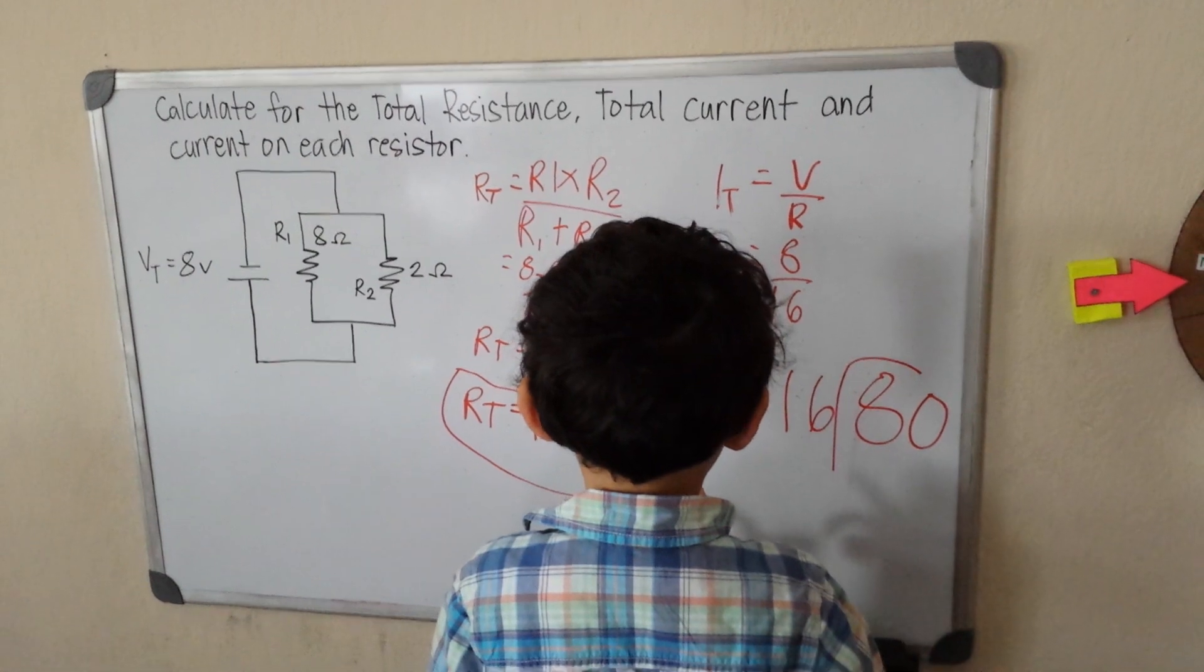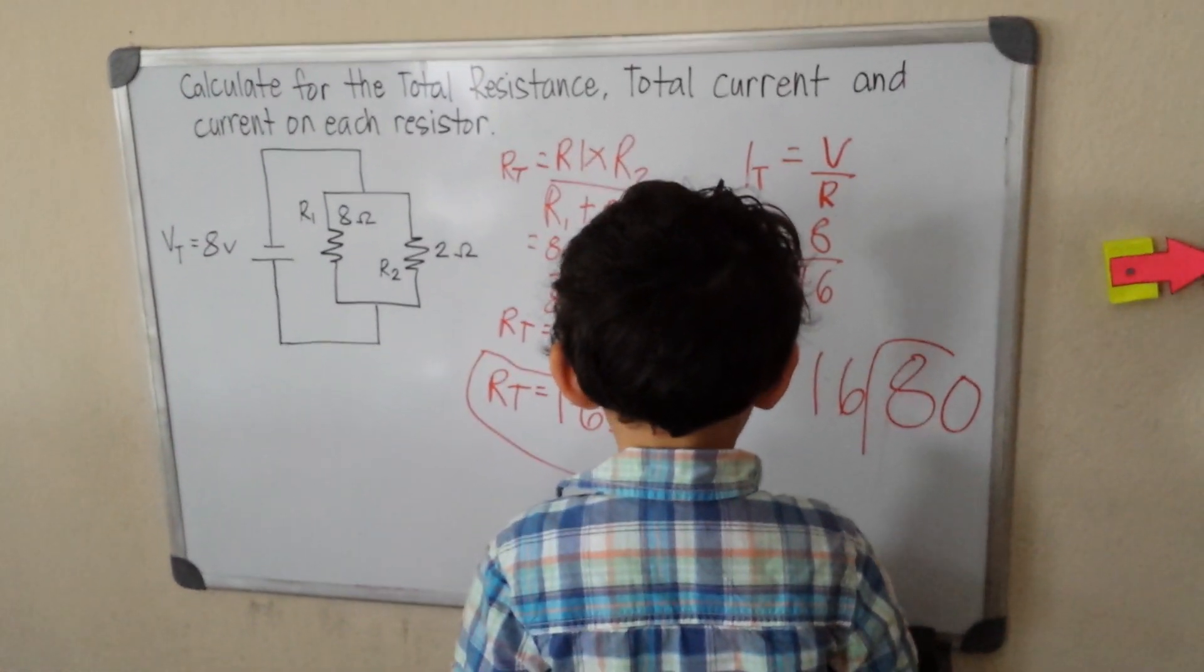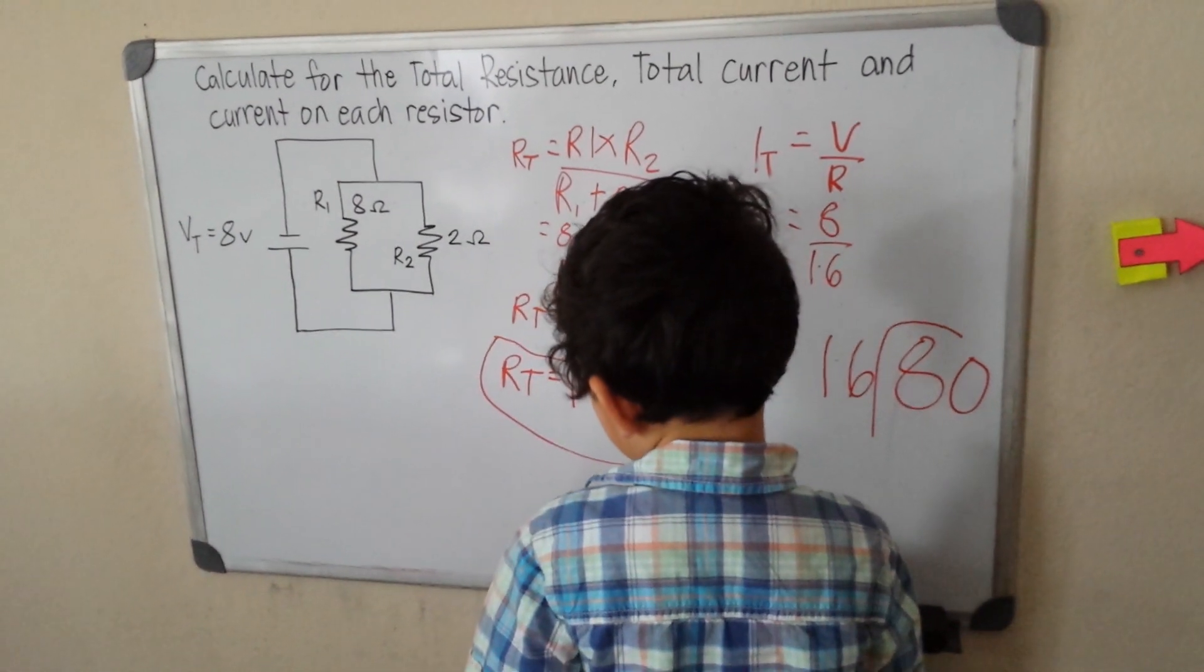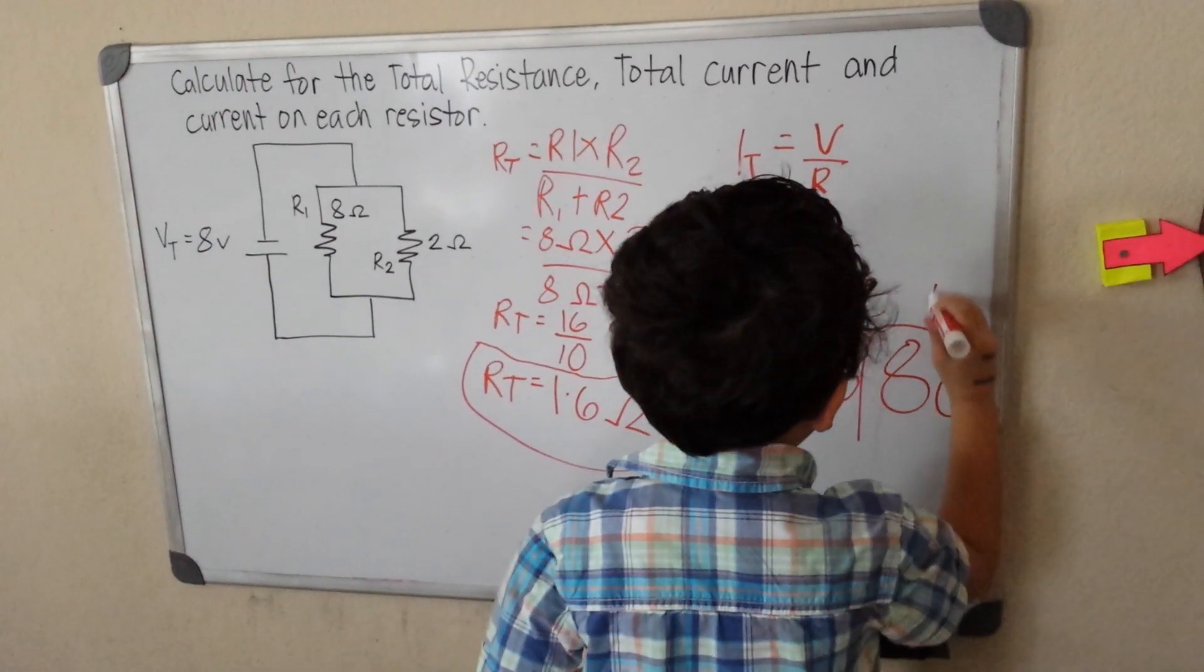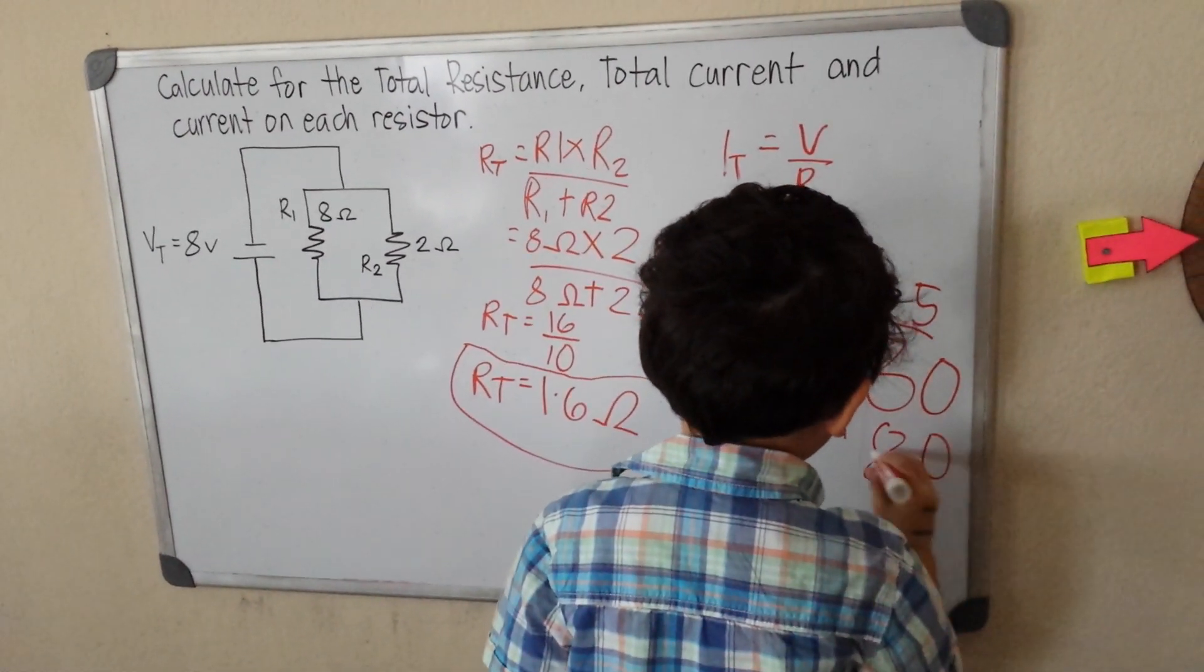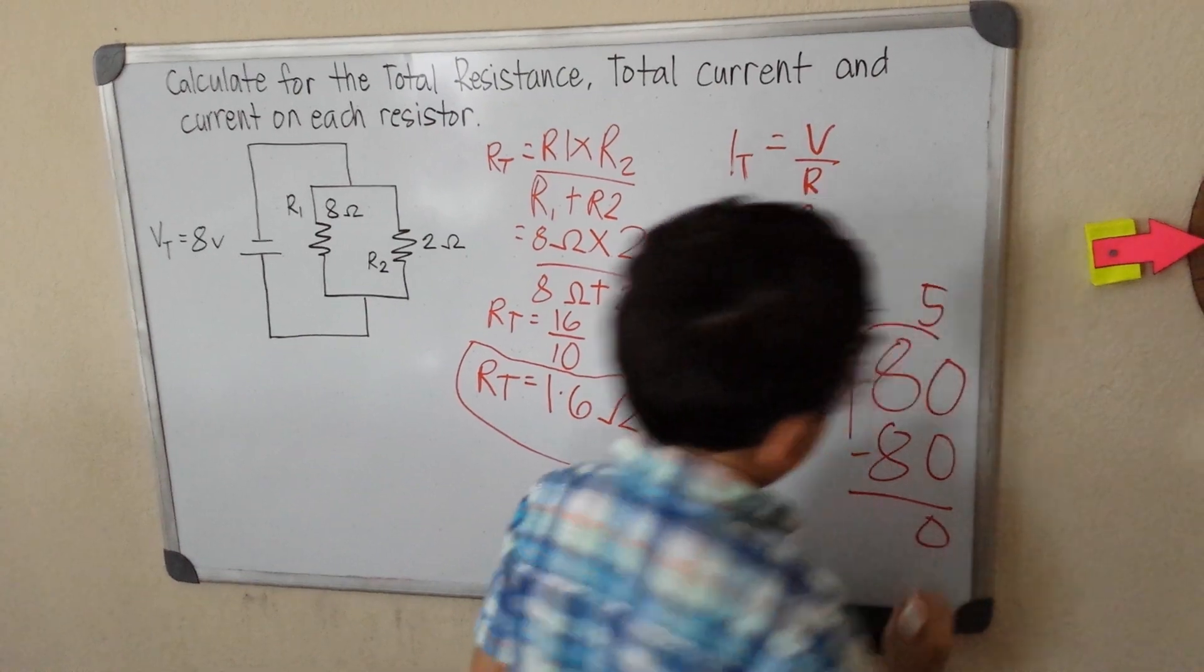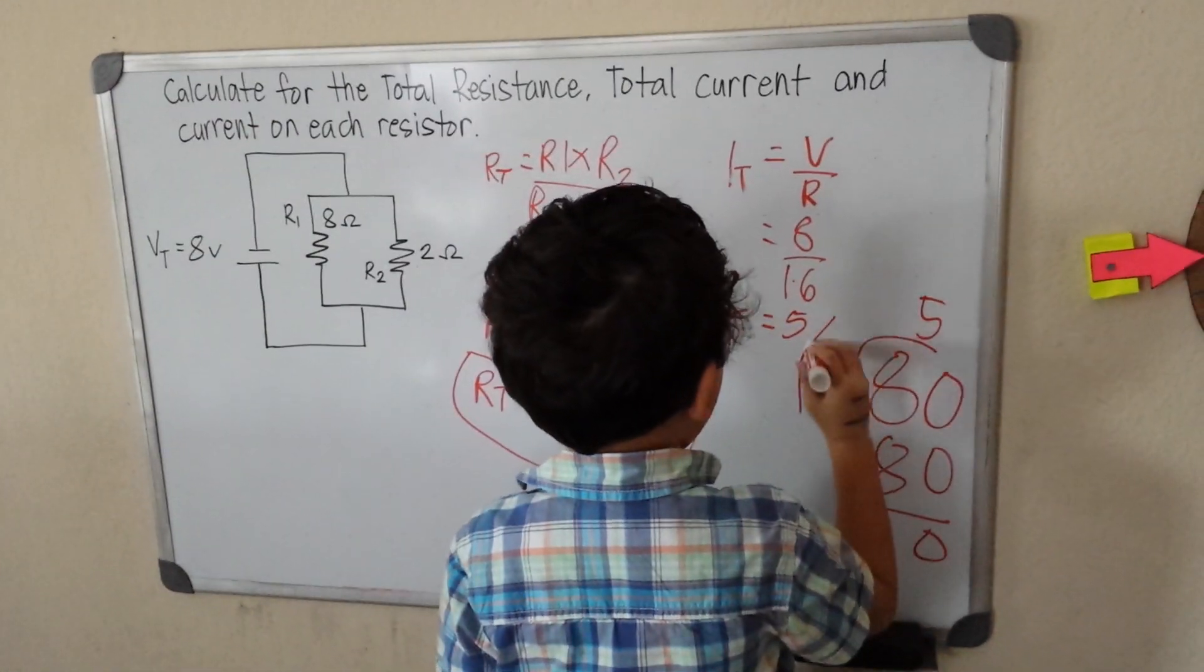16, 32, 48, 64, 80. That's 5. That's easy. I know it. Five times 16 is 80. 80 minus 80 is 0. So it's 5 amperes.